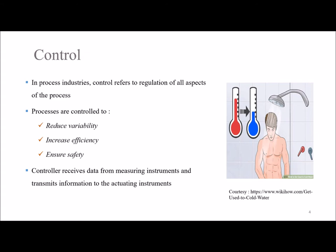Only after some time, we will feel the water becoming warm, and most of the time it crosses the desired level. This would drive us to adjust the hot water knob again, but in the opposite direction, to get the desired temperature of water. This is an example of control based on human senses.